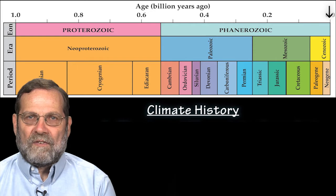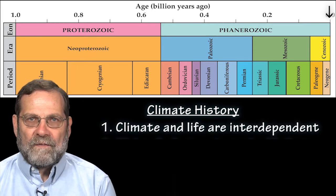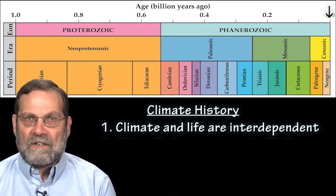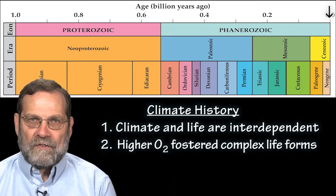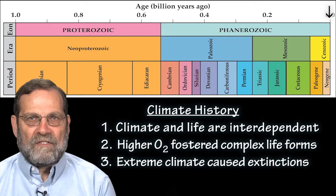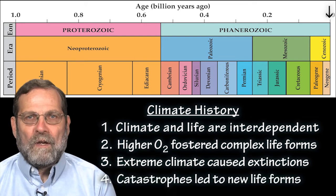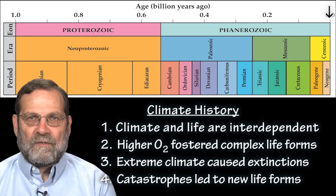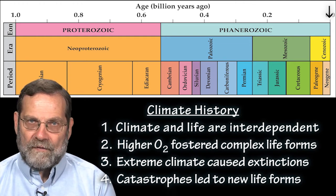The four key points of this segment are: number one, climate and life are interdependent; number two, higher atmospheric oxygen levels fostered complex life forms; number three, mass extinctions occurred during periods of extreme climate; and number four, major catastrophes provided opportunities for new biological life forms.